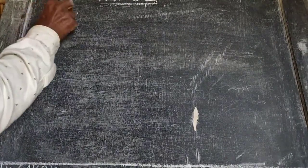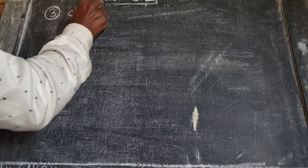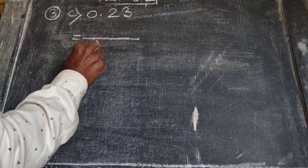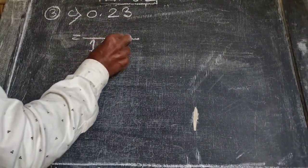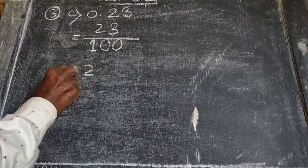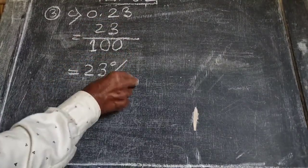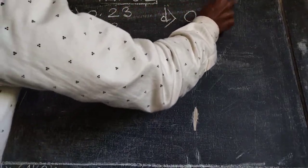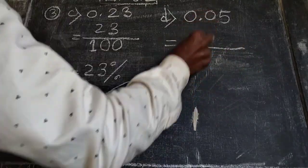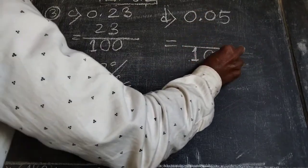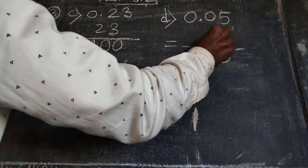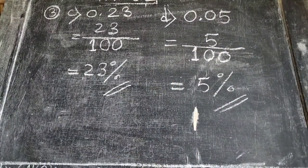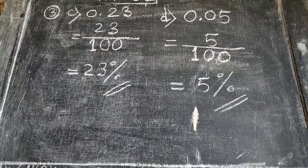Next, (c) 0.23 — for the decimal point, 2 digits means 2 zeros in the denominator, giving 23 by 100, which equals 23 percent. And (d) 0.05 equals 5 percent. That completes Question 3.